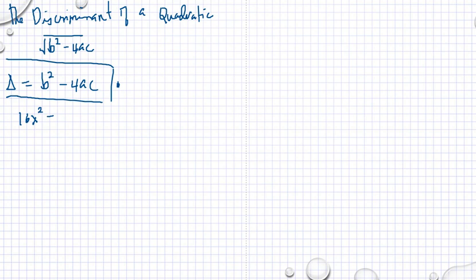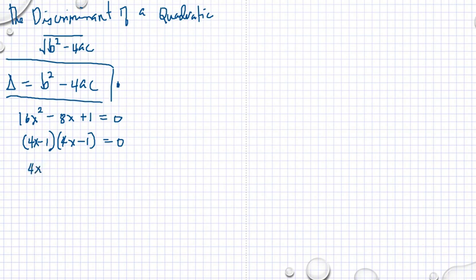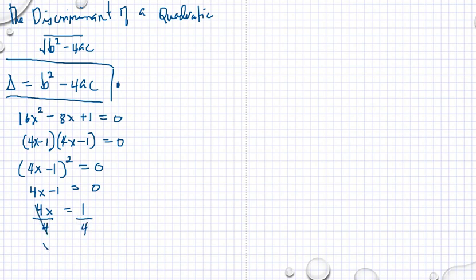16x squared minus 8x plus 1 is equal to 0. Maybe this is easy to see that this is a perfect square, so that we can factor it as 4x minus 1 times 4x minus 1, or (4x minus 1) squared is equal to 0. Then we get the value of x by taking the square root of both sides of the equation. Then we have 4x minus 1 is equal to 0, so 4x is equal to 1, divided by 4, and we have x is equal to 1/4.